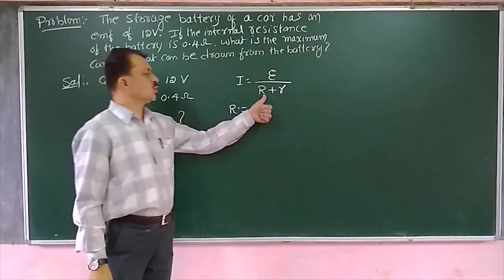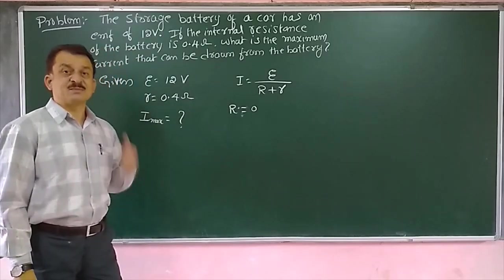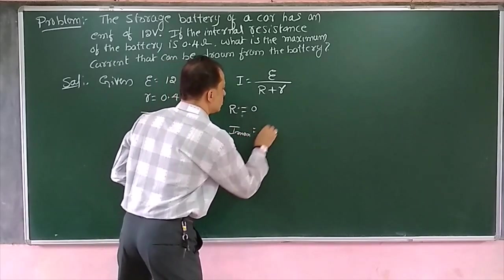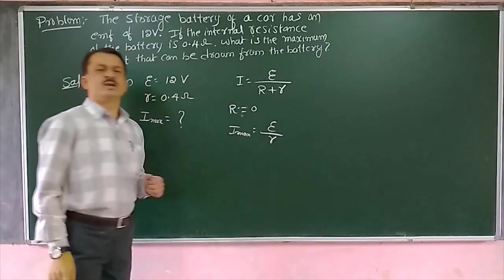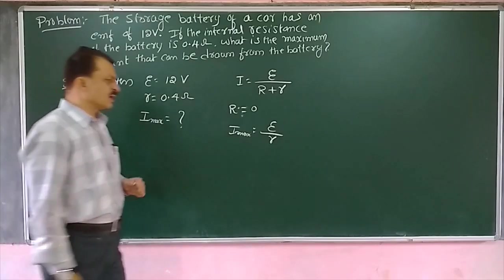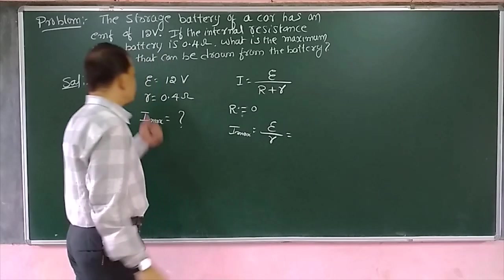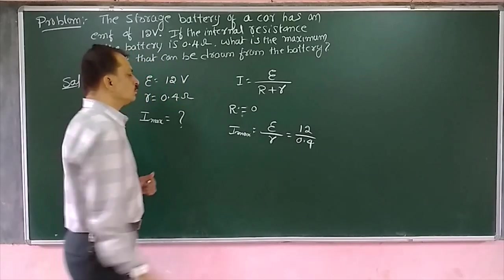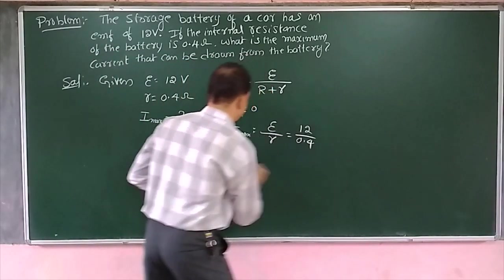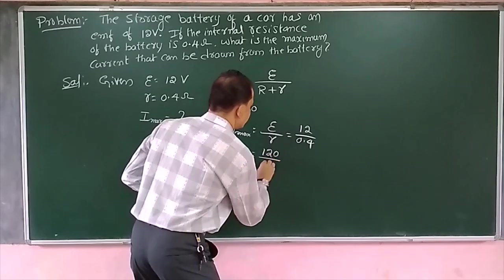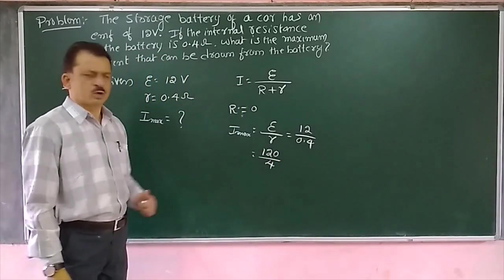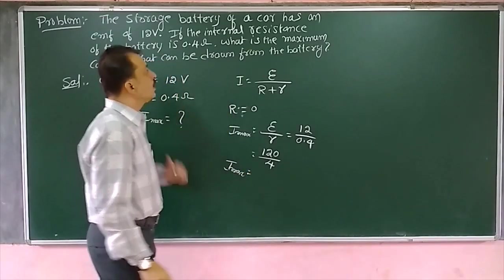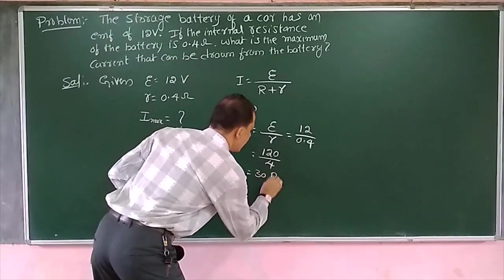That means when the external load is disconnected, we can draw maximum current from the battery. If this is the case, then I maximum is equal to EMF divided by the internal resistance of the battery. So EMF is 12 volts and internal resistance is 0.4, which gives 120 divided by 4. Therefore, the maximum current that we can draw from this battery is 30 amps.